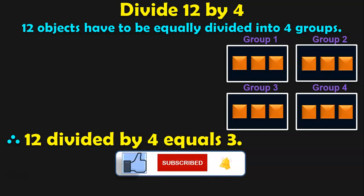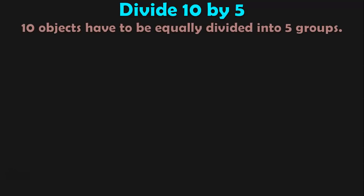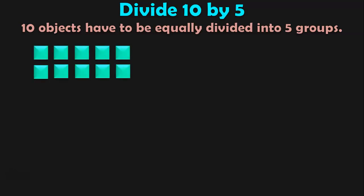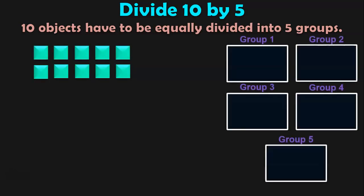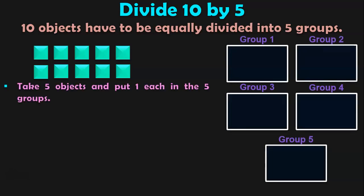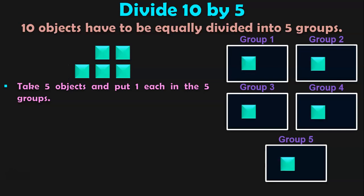Hope you have understood so far. Stay with me till the end of this video as we are going to do many more such sums. The next sum is divide 10 by 5, that is divide 10 objects equally into 5 groups. Here we have 10 square objects and 5 groups. As we have to divide by 5, take 5 objects and put 1 each in the 5 groups.